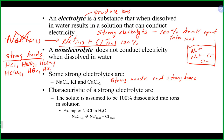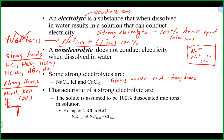Strong bases typically have hydroxide in them — like sodium hydroxide or potassium hydroxide. On the periodic table, going from group one over to calcium and down, any of those metals with hydroxide connected to them are typically strong bases. Group one is the alkali metals, group two is the alkaline earth metals, and the word 'alkaline' means basic — that's where a lot of our strong bases come from.